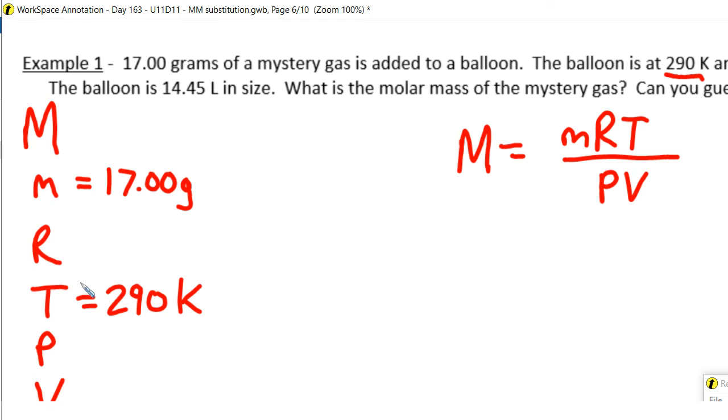My pressure is standard pressure. Pressure is 1 atm, 1 of Earth's atmospheres. So that's basically pressure at sea level on a normal day. And the volume of the balloon, which can be tricky to measure, but if you have the volume of your gas, plug that in, 14.45 liters.